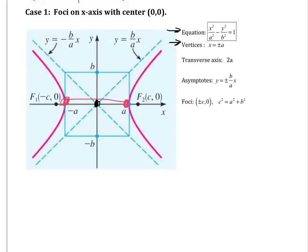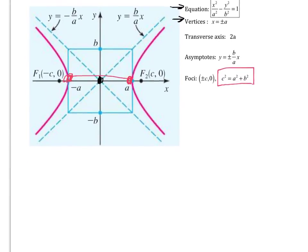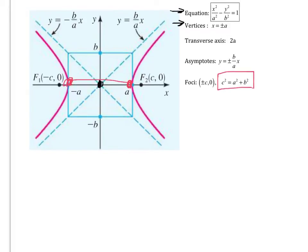We'll talk about the asymptotes in just a second. The foci will be at plus or minus C, zero. This is a very important equation that tells you the relationship between the coordinates of the foci and the coordinates of the vertices and B. Now let's talk about the asymptotes — think of that as the end behavior. What happens to y as x gets very big? What we're going to do is solve the equation for the hyperbola for y and then look at what happens as x gets big.